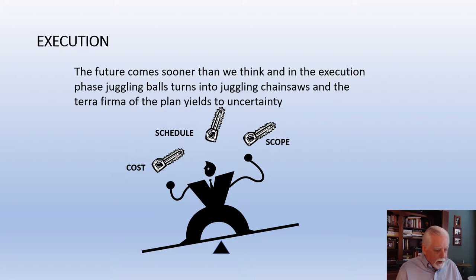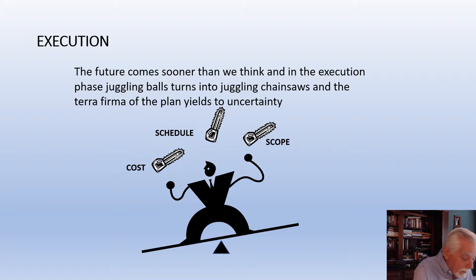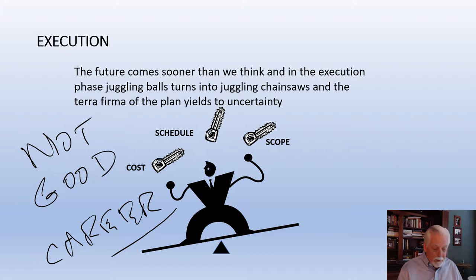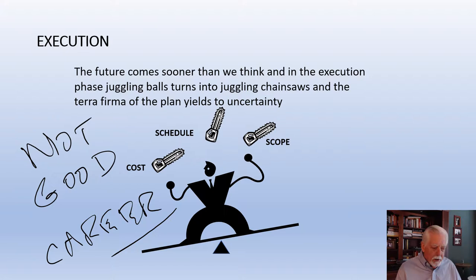What happens next is that the future is upon us and there's a potential for those bowling balls to turn into chainsaws. If you're that project manager juggling chainsaws, that's not good for your career. The business equivalent of being good at juggling chainsaws might be being a good BS artist, and we don't want to encourage our project managers to be BS artists.